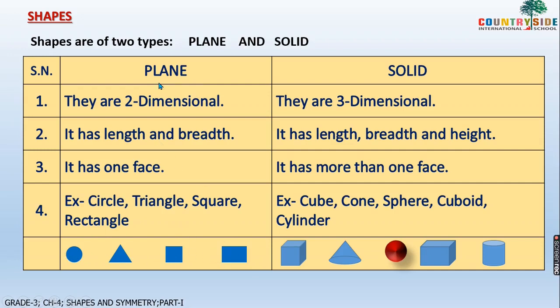Children, plain shape simply means: when you draw any shape on paper — for example, if you are drawing a circle or a square — you will be able to see the face of that particular shape. And that shape will be the two dimensional shape, having only one face.